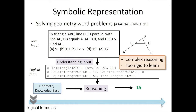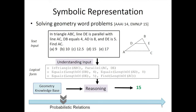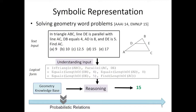What we want is to make these logical representations a little softer. We can use formalisms like Markov logic networks or probabilistic relational models. For this work, we focused on using probabilistic relations and assigning probabilistic scores to each relation extracted from the geometry problem. So we represent the problem using these probabilistic relations, and later I'll show how we use them to finally solve the problem.